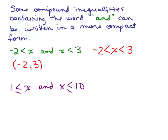This is saying x is between 1 and 10, so: 1 is less than or equal to x is less than or equal to 10. You're looking for numbers between 1 and 10 and they can include 1 and 10. So in interval notation, that would be [1, 10].